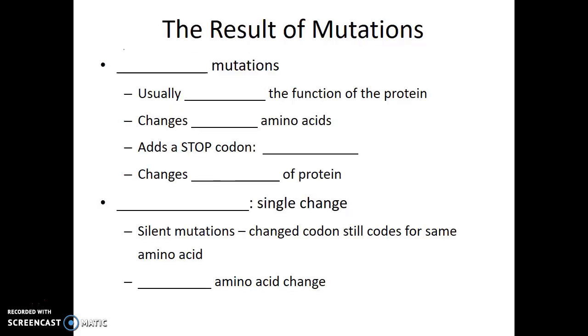In frameshift mutations, they usually destroy the function of the protein because there isn't just a change in one amino acid, it changes many amino acids. In fact, one of the things that typically happen with a frameshift mutation is that you end up getting a stop codon much earlier in the gene than otherwise expected. It truncates the gene and this definitely changes the shape of the resulting protein.